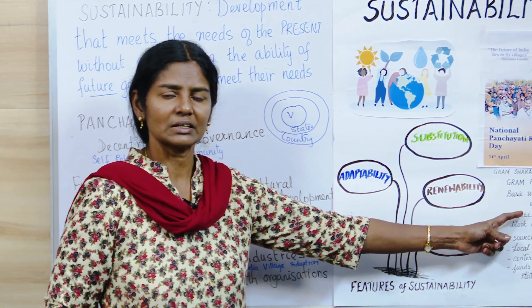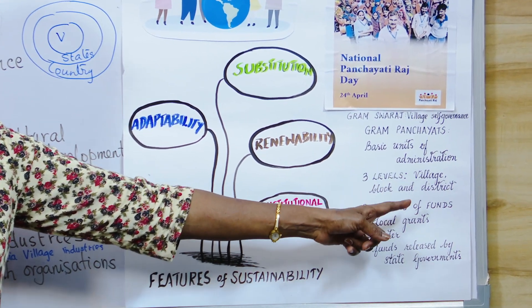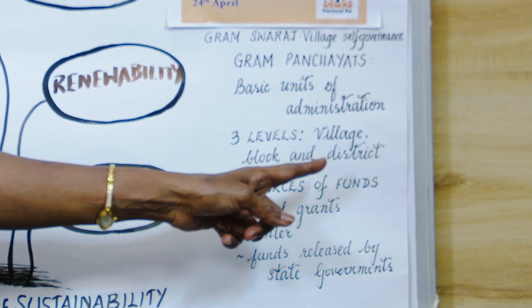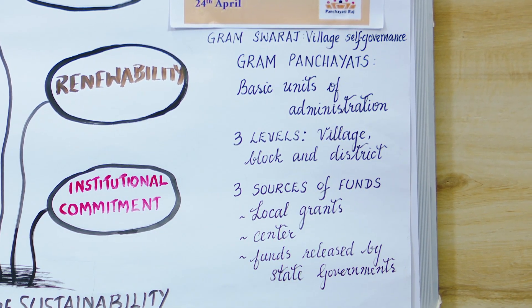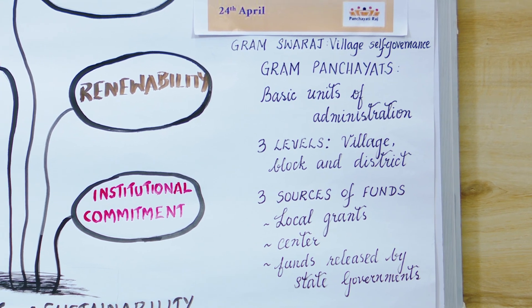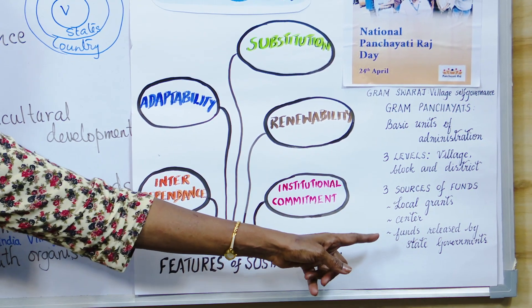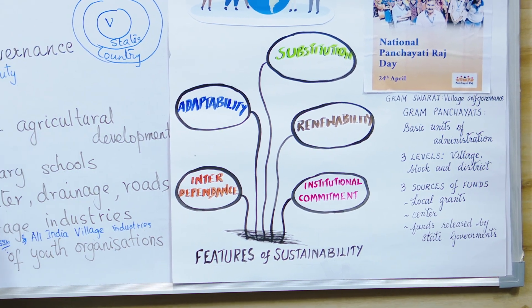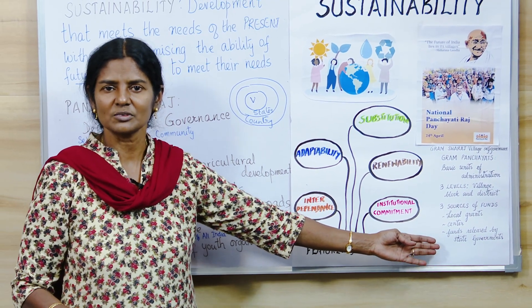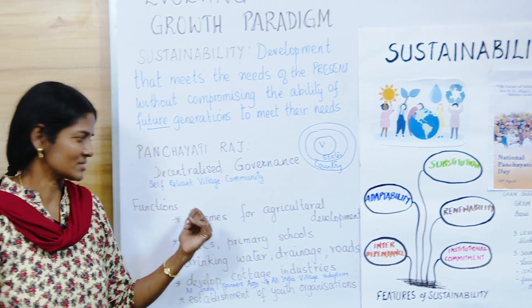Panchayati Raj is made up of three levels: starting from the village, then blocks — many villages make a block — and then districts — many blocks make a district. There are also three sources of funds: local grants, where local issues are resolved using locally pooled money; central grants, for example to start a hospital or a school; and state government releases. These are the three funding sources for the functioning of Panchayati Raj.